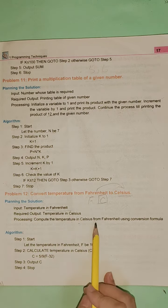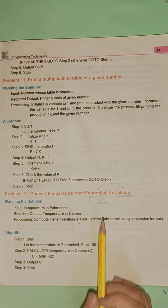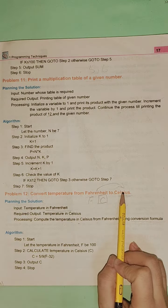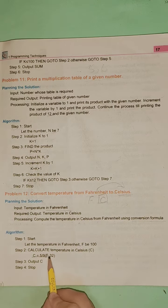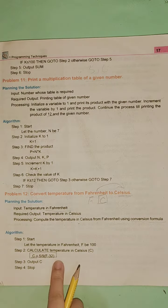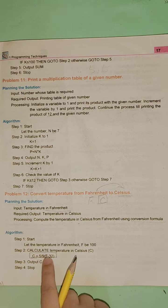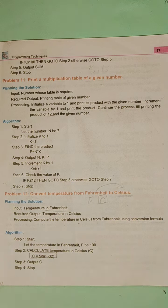Processing: compute the temperature in Celsius from Fahrenheit using conversion formula. Now Fahrenheit to Celsius conversion formula - through this formula we can get Celsius.